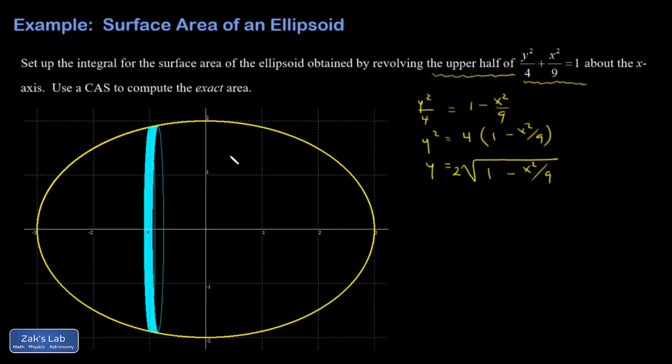So that's the curve. The reason that was important is because if this is an x value, a horizontal location x, then the radius of that ribbon is going to be given by 2 root 1 minus x squared over 9.